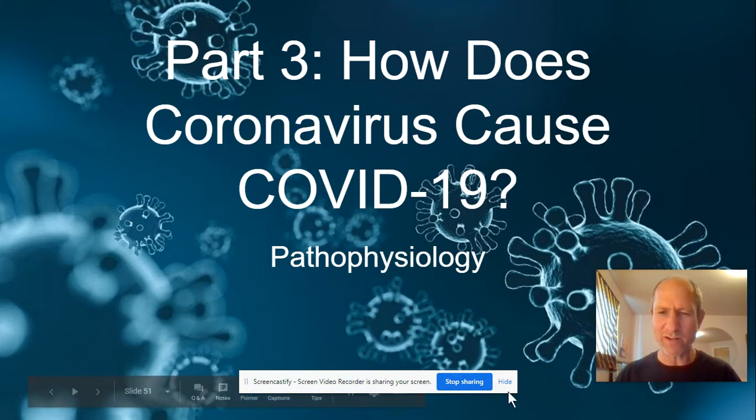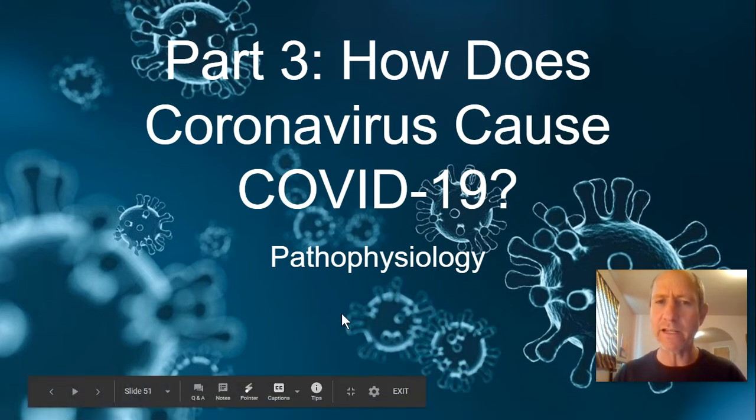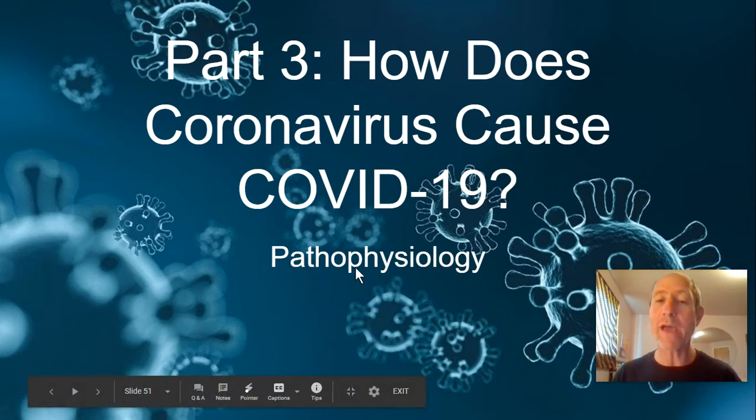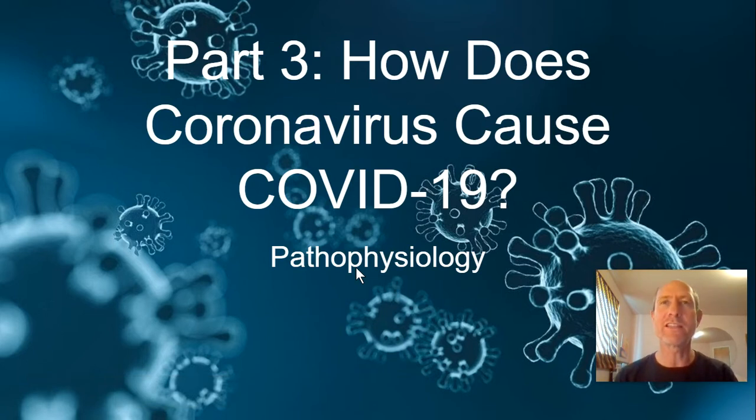So let's break down this word. Pathophysiology. Patho refers to pathogen, which is something that causes disease, and disease is whenever your body's not working properly. Physiology means how an organism works, like how the biochemistry of the organism works. So when we're talking about pathophysiology, we're studying about how the disease happens. That's what we're looking at right now. How does COVID-19 happen?